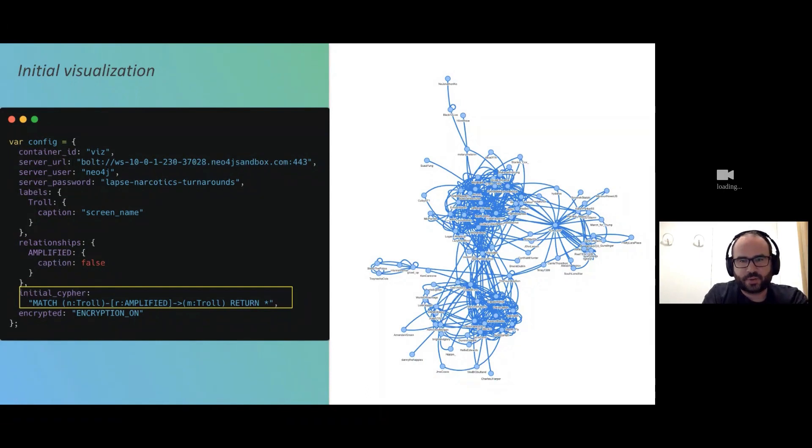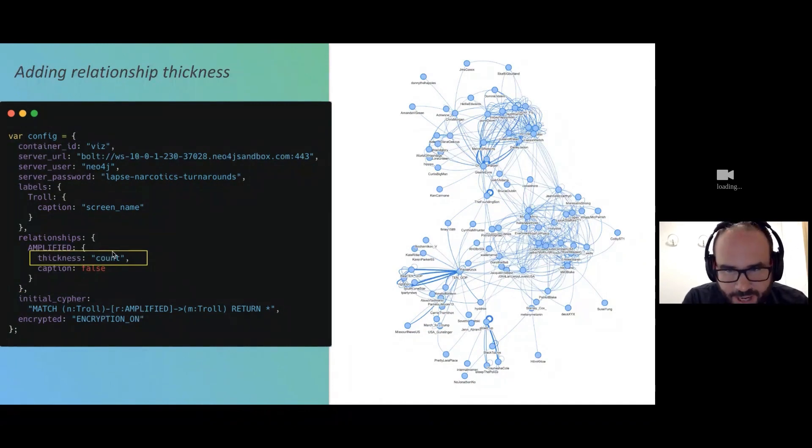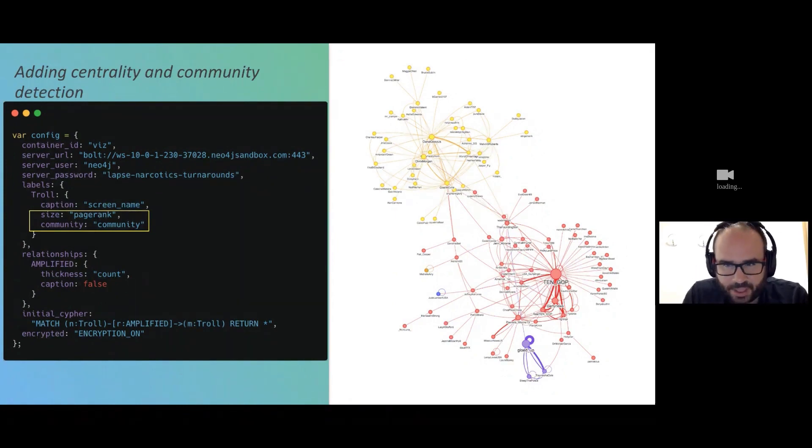Here I specify the initial cypher query. With NeoVis you typically only want to visualize some part of the graph, not necessarily the whole data set. So we define some initial cypher query and we can adjust this later on and render updates to our visualization. Now we're changing the configuration to add relationship thickness in. On these amplified relationships we've stored a count property, which is basically the number of times that one user retweeted another. So now we start to see some relationships are thicker than others. One thing that's nice is because we're using this force directed layout, which is common in graph visualizations, we can start to see where clusters form in the graph. That's nice, but we also have page rank and the results of label propagation that we just ran previously in sandbox that we can use to style the visualization.